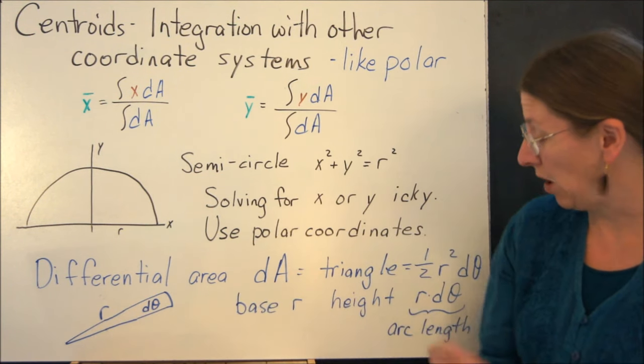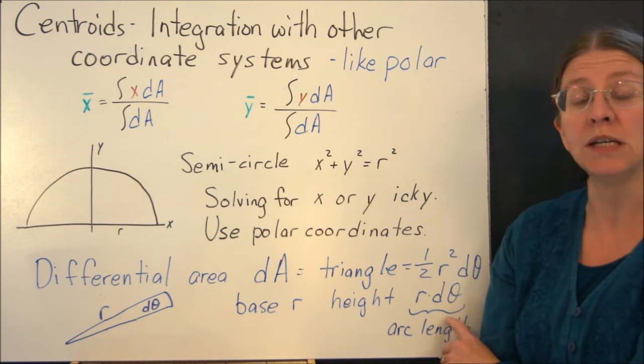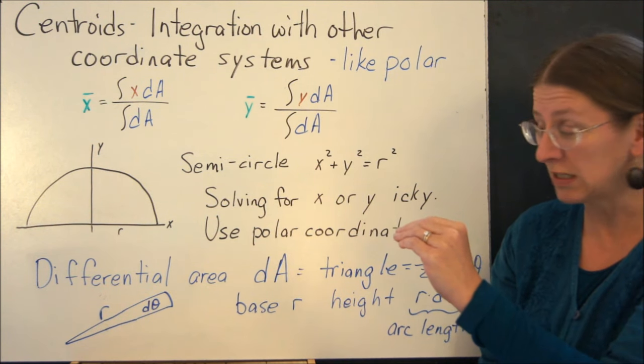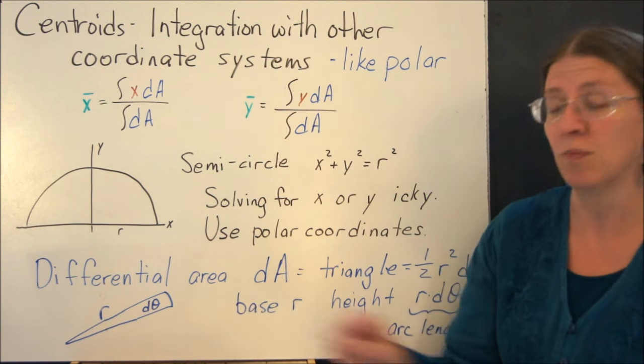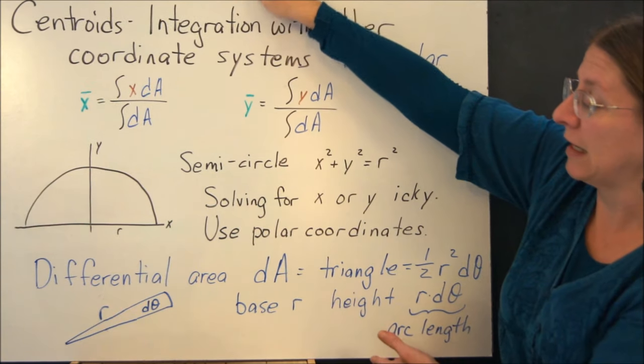While my base is going to be r, my height, and this comes from the arc length formula, the height of my triangle is r d theta. As my theta becomes very skinny, this curvature becomes unimportant. So now I have a differential area that I can use.